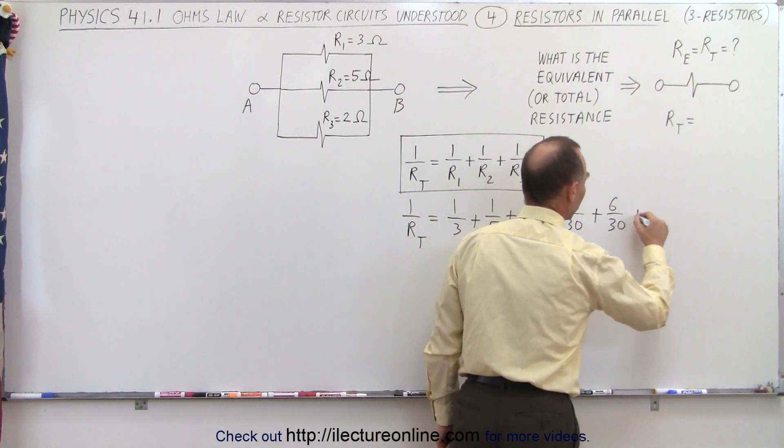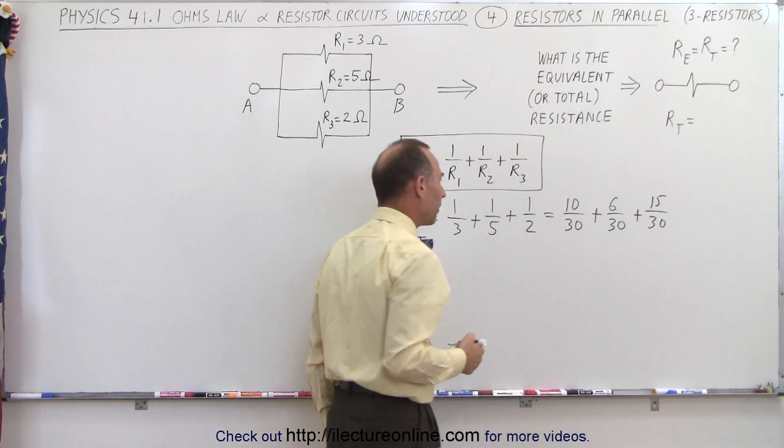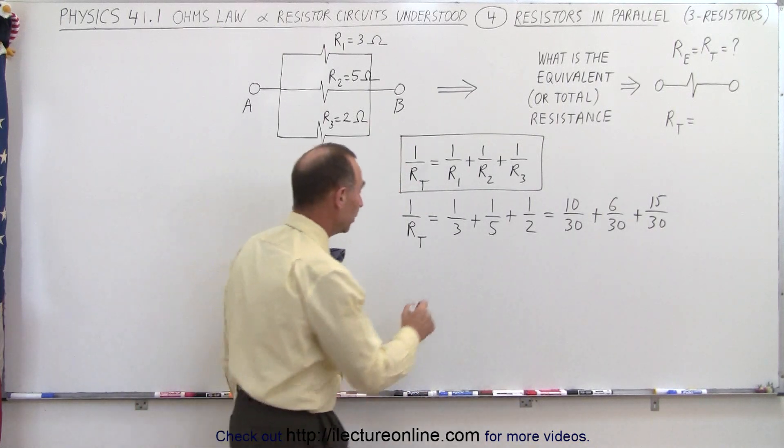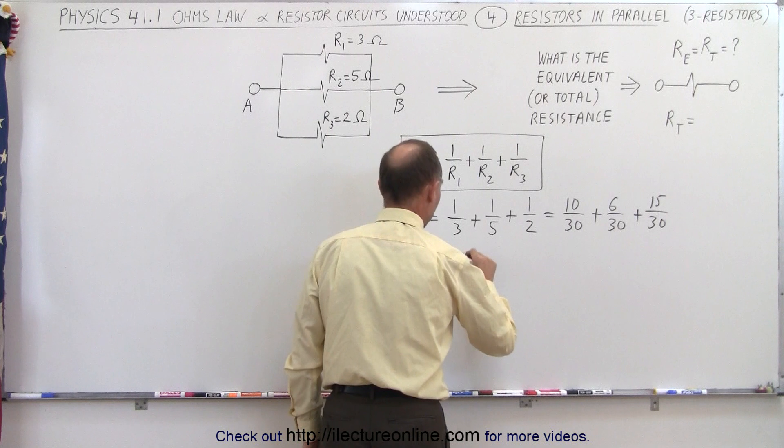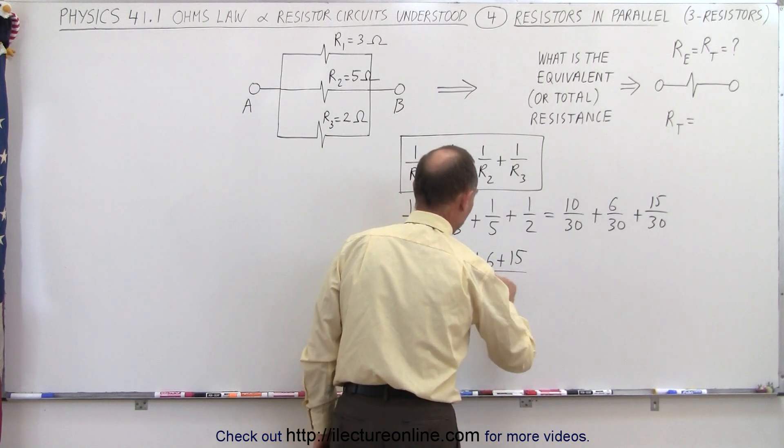And this would be plus 15 over 30 by multiplying the top and the bottom by 15. So, now we have a common denominator. This can be written as 10 plus 6 plus 15, all divided by 30.